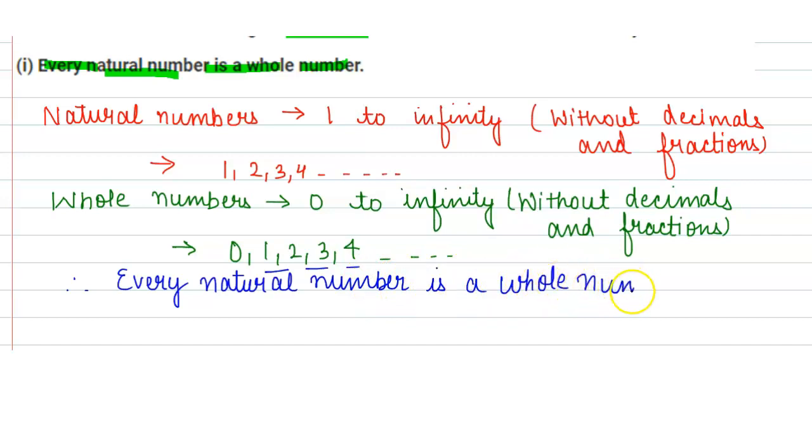But if we see the reverse question: is every whole number a natural number? The answer is no. Not every whole number is a natural number because whole numbers include zero, but natural numbers do not have zero.